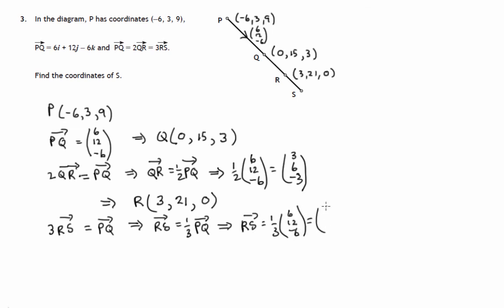So that'll be (2, 4, -2). So there's the instructions going from R to S. So that would imply that S is the point, well, we were at 3 on the x, we've gone another 2, we're going to be at 5.